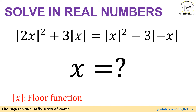In this problem we are dealing with the floor function. In particular, we are going to solve an equation where on the left-hand side we have 2 to the power of the floor of 2x, plus 3 times floor of x. On the right-hand side we have floor of x to the power of 2 minus 3 times floor of negative x.